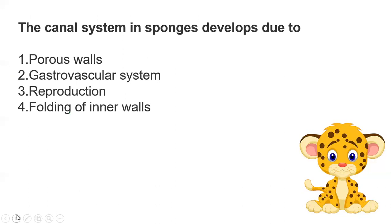Next question: the canal system in sponges develops due to — forced vault, backflow activity, retroduction, or folding of interior walls. The answer is the folding of the inner walls. This is the process that causes the development of the canal system in sponges.